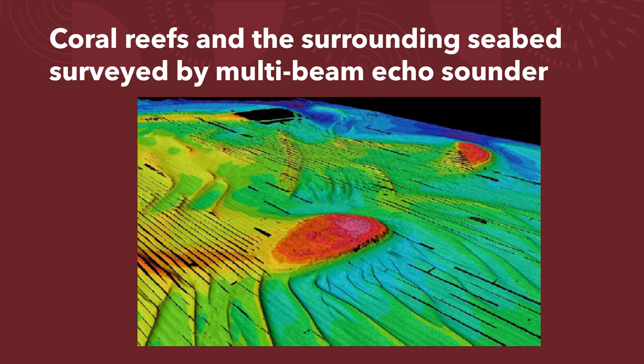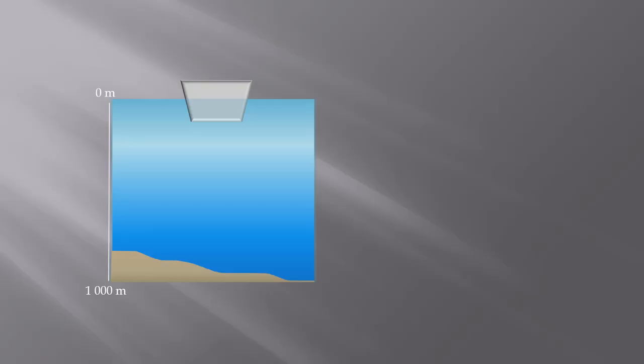In very simple terms, seabed mapping, or more accurately hydrographic surveying, is undertaken using some type of echo sounder. An echo sounder works on the principle of emitting a sound pulse in the water, then timing how long it takes for that pulse to hit the seabed and return as a reflection.